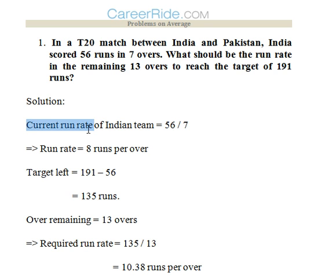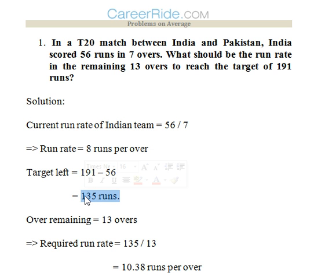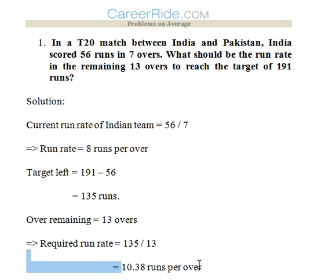The current run rate of the Indian team is 56 by 7 — that is 56 runs scored in 7 overs, so 8 runs per over. The target left would be 191 minus 56, that is 135 runs. So 13 overs are left and 135 runs are to be made — that is 135 by 13, which is 10.38 runs per over. India still needs to beat Pakistan in this 2020 match.